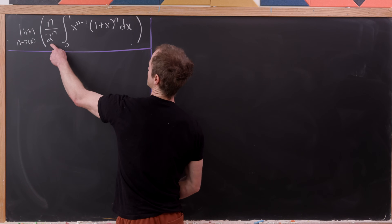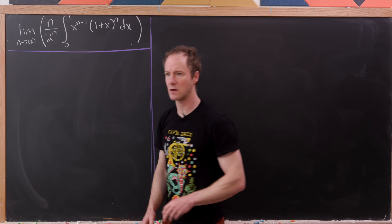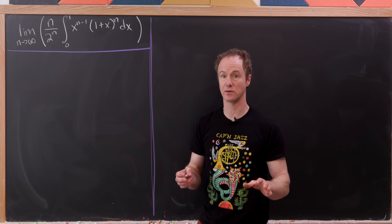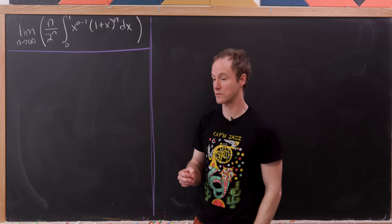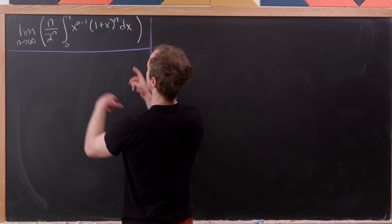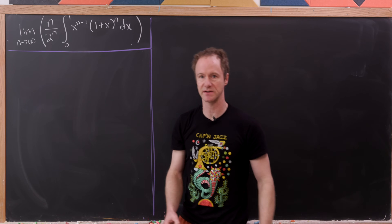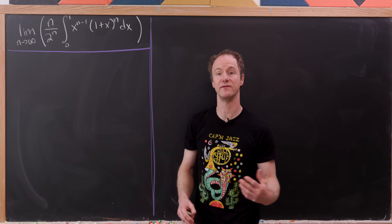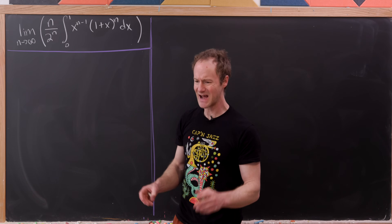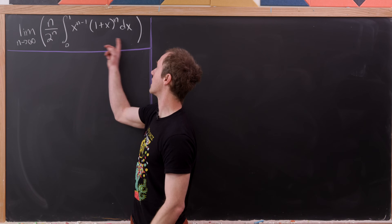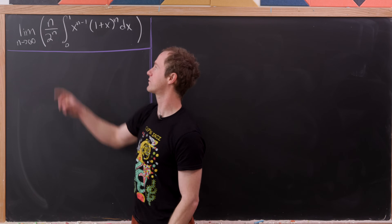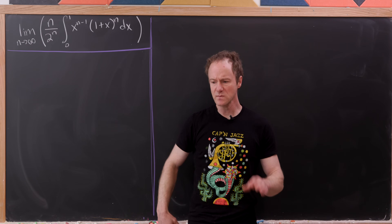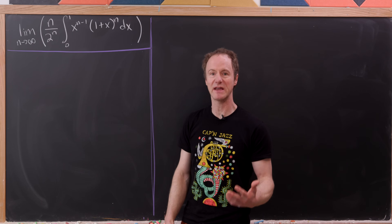If this is approaching 0, presumably we'll get an interesting value for this integral — like some sort of non-zero real number — that means the integral has to be approaching infinity. So somehow these two balance each other out kind of nicely. In other words, it's telling us the growth rate of this integral with respect to this n over 2 to the n. So let's get started.